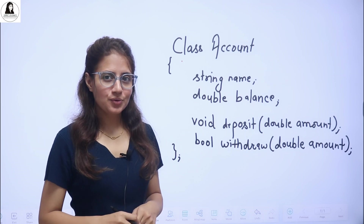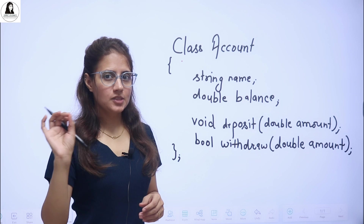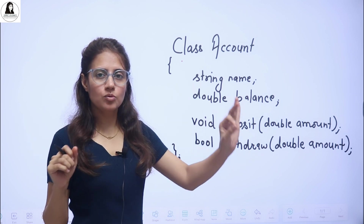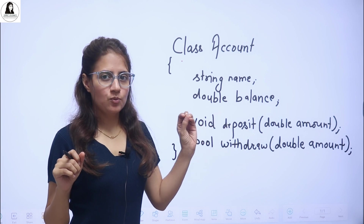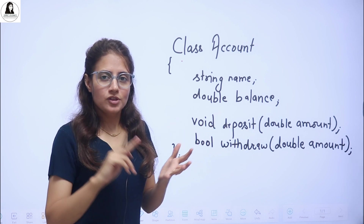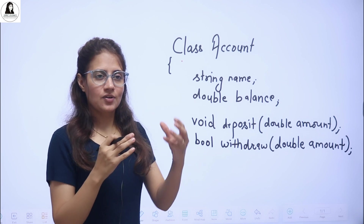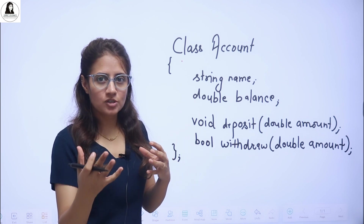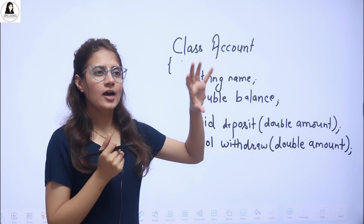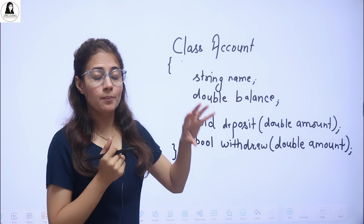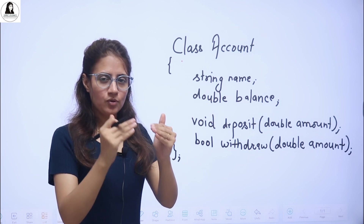Hey everyone, I hope you are safe and doing good. In the series of learning C++ programming language, we are discussing OOP concepts in C++. In the previous video, we have seen what is a class, what is an object, how to define a class, how to create objects, with the help of examples and real life examples as well. So in this video, we will see those things practically — creating a class, defining a class, creating some objects of that class, and accessing the attributes and methods with the help of those objects.